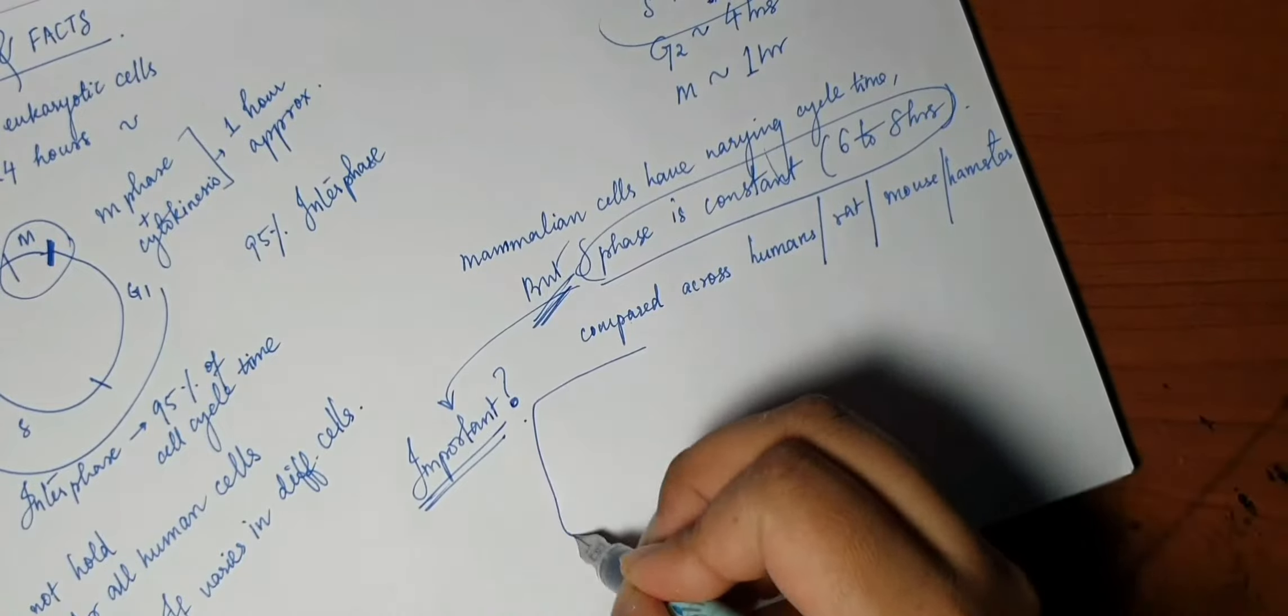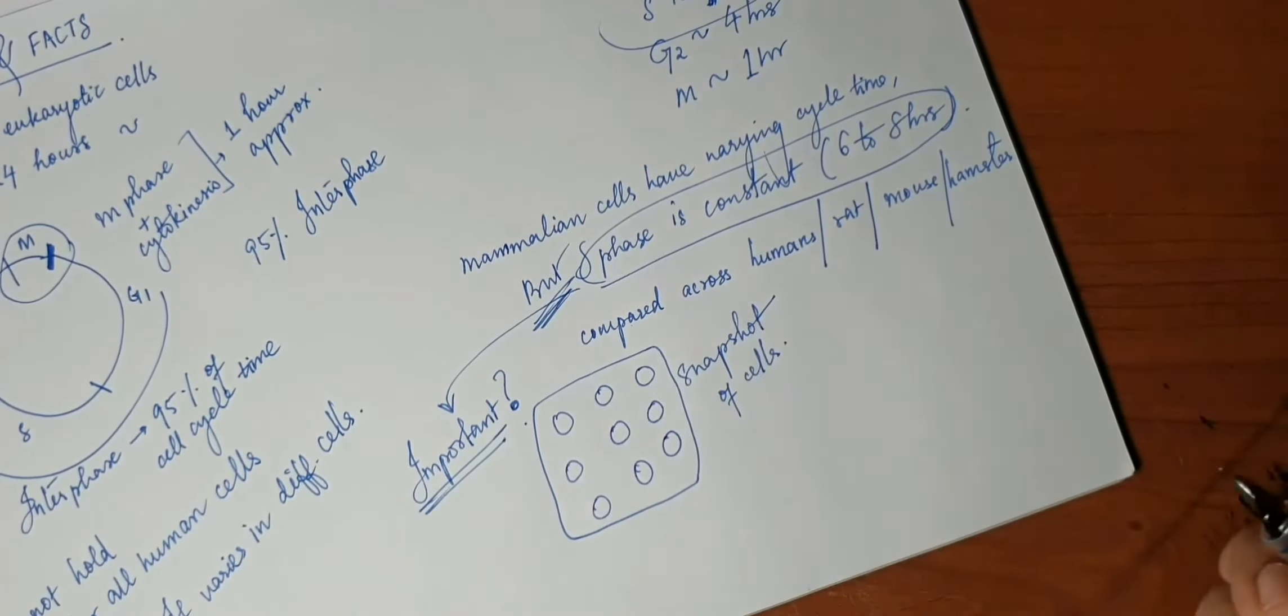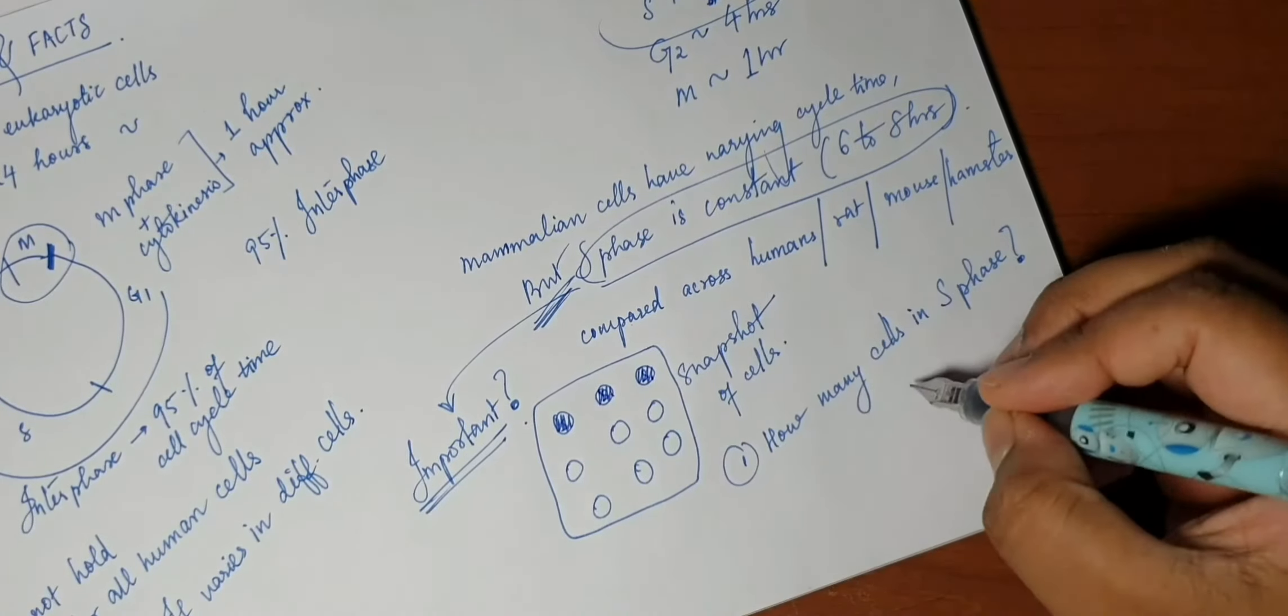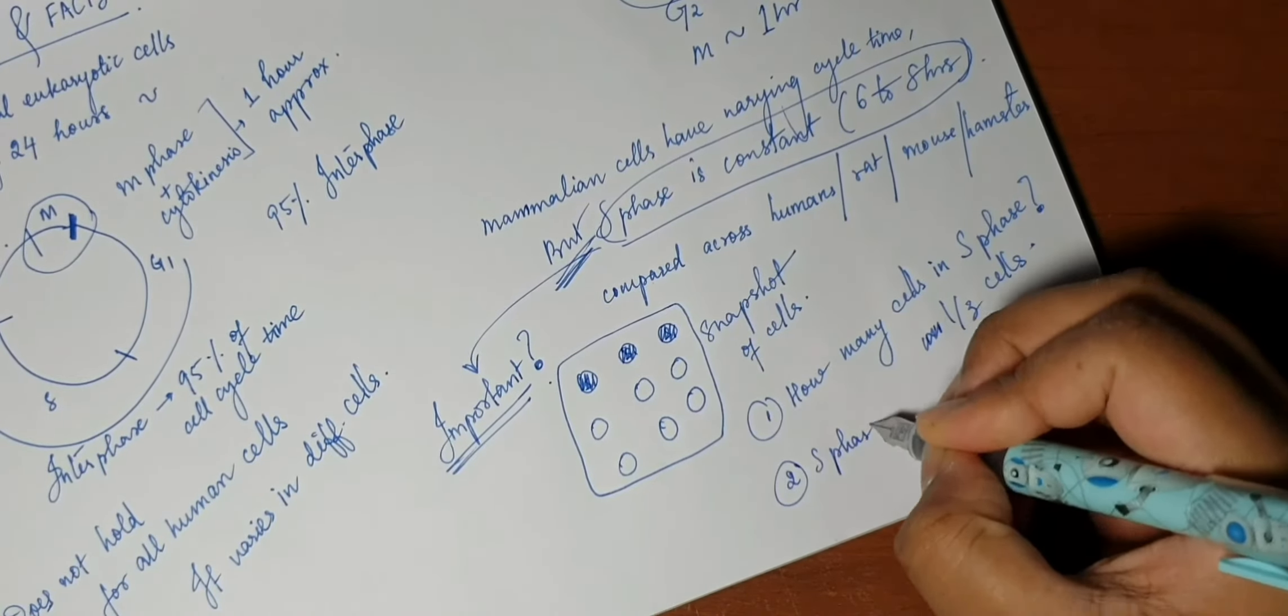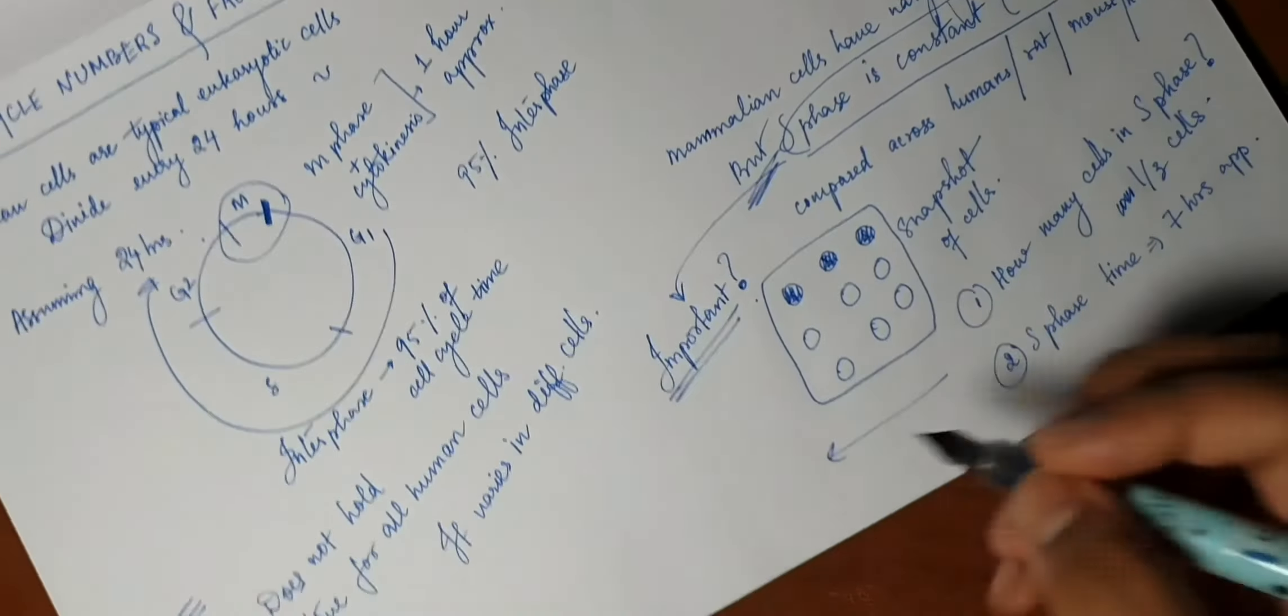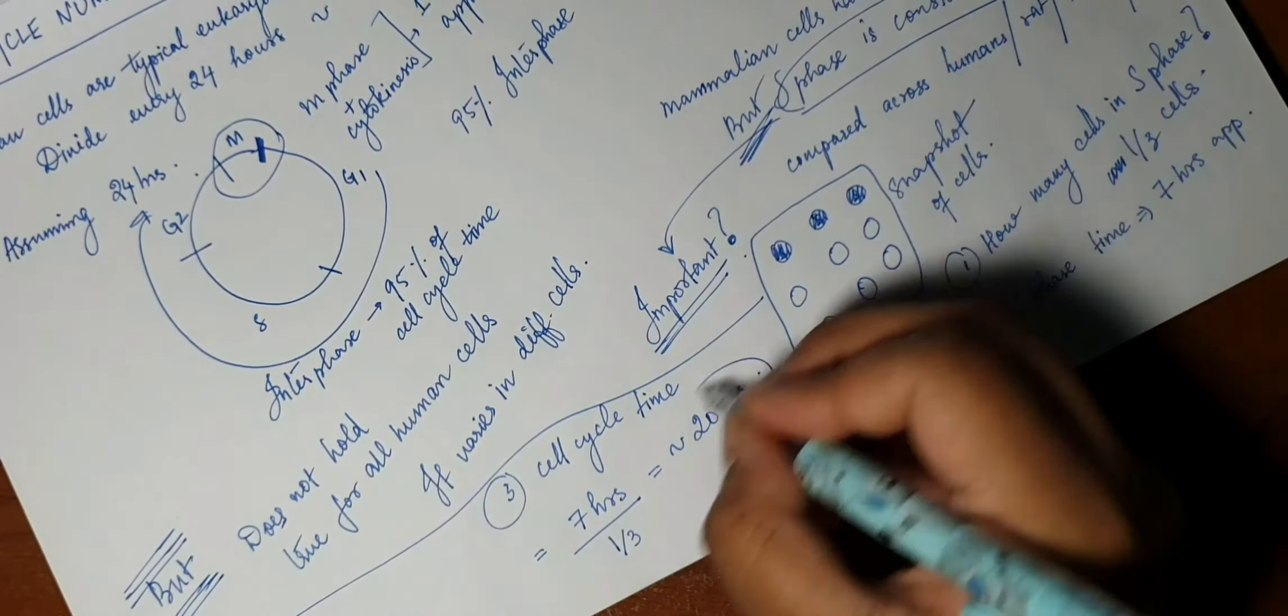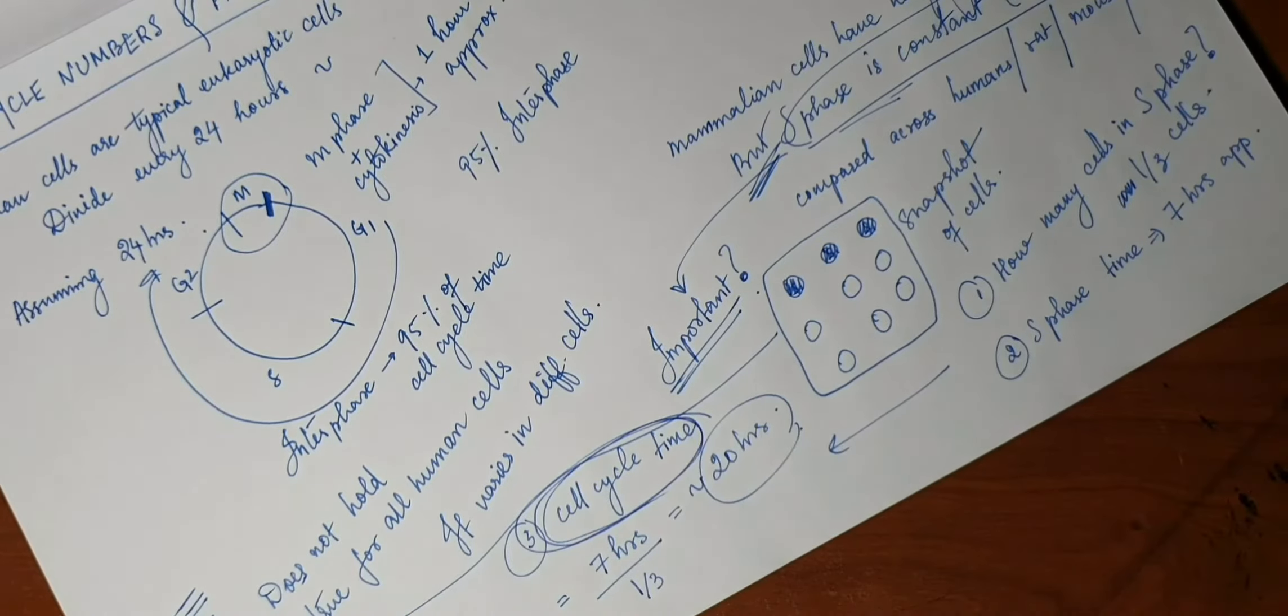So why is this fact important? Why do we care about the S phase? So supposing this is a snapshot of cells which are dividing. So first we see how many cells are in S phase, say three cells, so this is about one-third of the cells. The next thing, we already know the S phase takes about seven hours. So what can we do with these two numbers? We can find the cell cycle time. So we divide the S phase time by the number of cells in S phase. That is 20 hours. This method is still used to find out the cell cycle time.